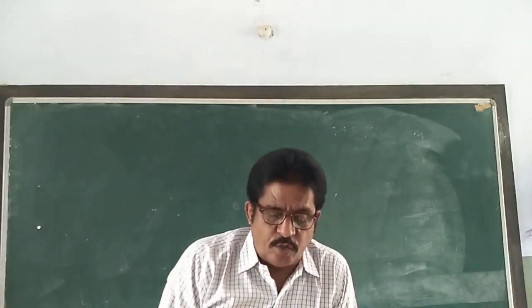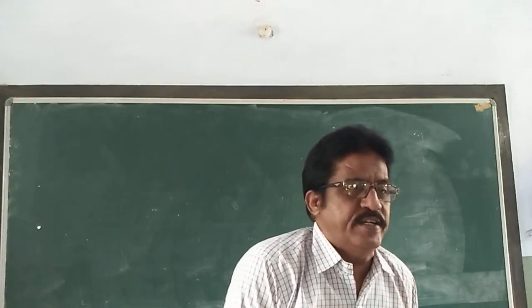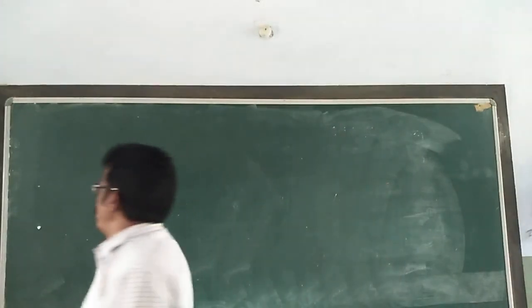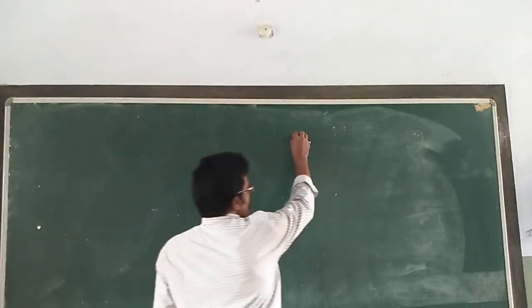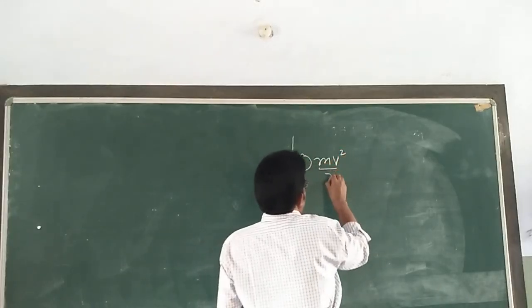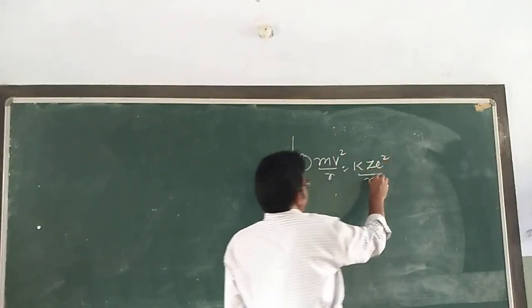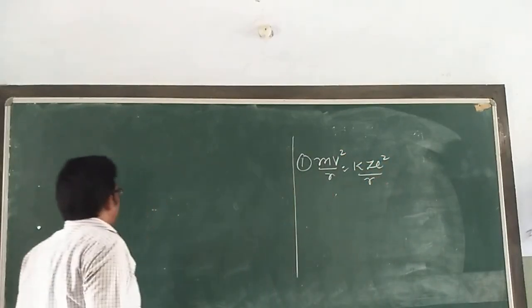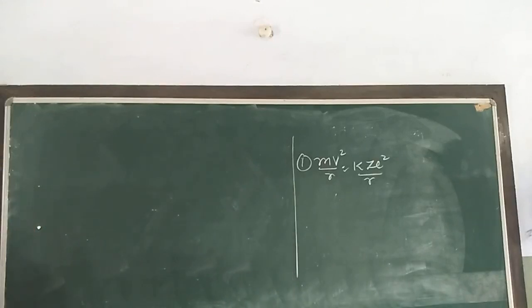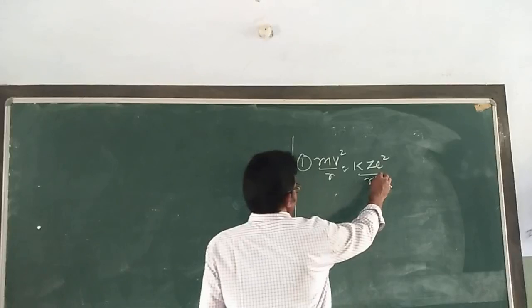So with the use of those postulates we are going to learn some more things about the radii of the orbit. We are going to find out using the three assumptions given by Bohr's. The first is mv²/r = kze²/r².